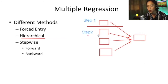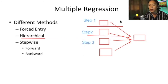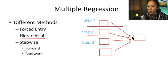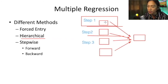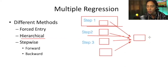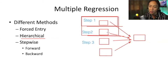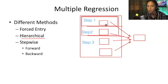In hierarchical regression, you decide the order in which variables are analyzed. For example, step one might analyze the influence of the first variable. Then in step two, you add a second variable to see if it adds additional variance explained in the outcome variable. Finally, step three adds the remaining variables. The researcher decides the order of the hierarchy, and I will explain why we should do this later on.